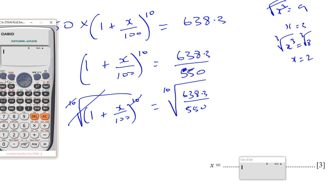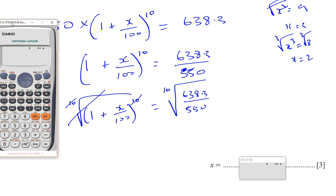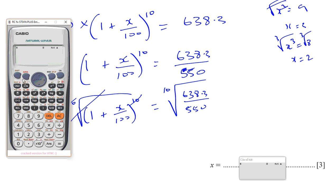Now, how do we do that? How do we use our calculator to do that? Well, we look for the button that has the root sign but with two boxes. So, if I press shift and this button here, this is the button we need. We're going to put the root that we need, the 10th root. So, I'll write a 10. Then, outside the square root sign on top, and then inside, I'm going to write 638.3 divided by 550.